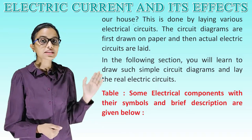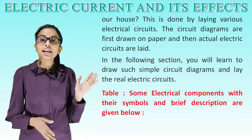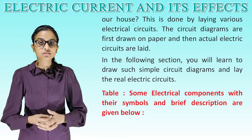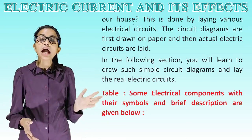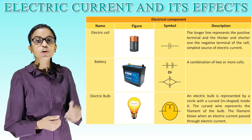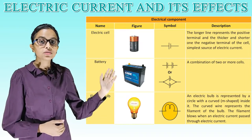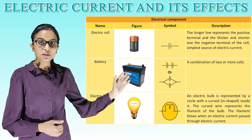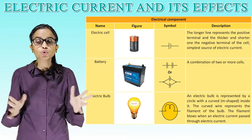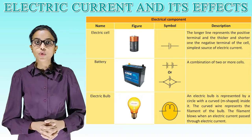Are you able to see this table? This table shows some electrical components with their symbol and brief description. The columns are: electrical component, name, figure, symbol, and description. Please go through this table and try to understand it.